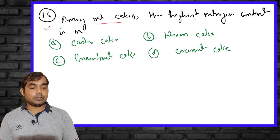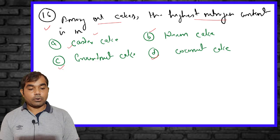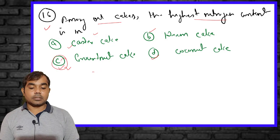The sixteenth MCQ asks: among oil cakes, the highest nitrogen content is found in which — castor cake, neem cake, coconut cake, or groundnut cake? The right answer is groundnut cake, which contains approximately 7.2 to 7.5 percent nitrogen.